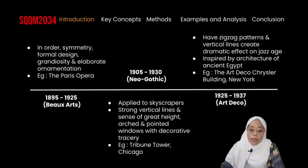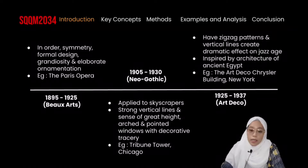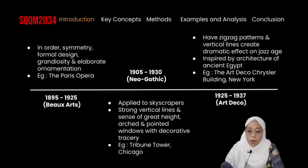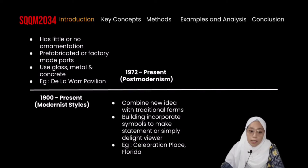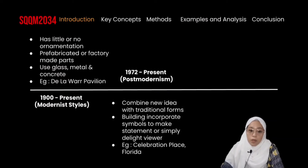Next, we have the Neo-Gothic era, applied to skyscrapers which have strong vertical lines, a sense of great height, arches, and pointed windows with decorative tracery. Next, we have Art Deco from 1925 to 1937, whose architecture features zigzag patterns and vertical lines that create a dramatic effect. We also have the period from 1900 to now, where architecture has little or no ornamentation — what we call Modernism. Last but not least, we have Post-Modernism architecture from 1972 to now, which is a combination of new ideas with traditional forms.